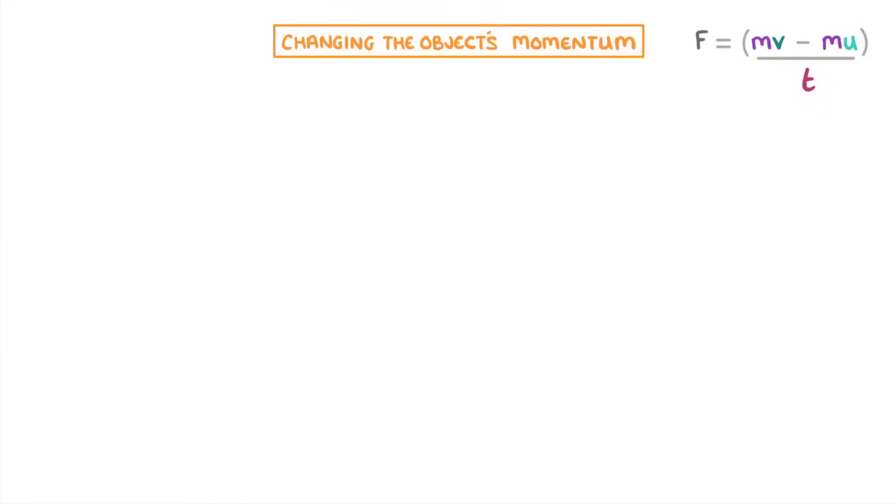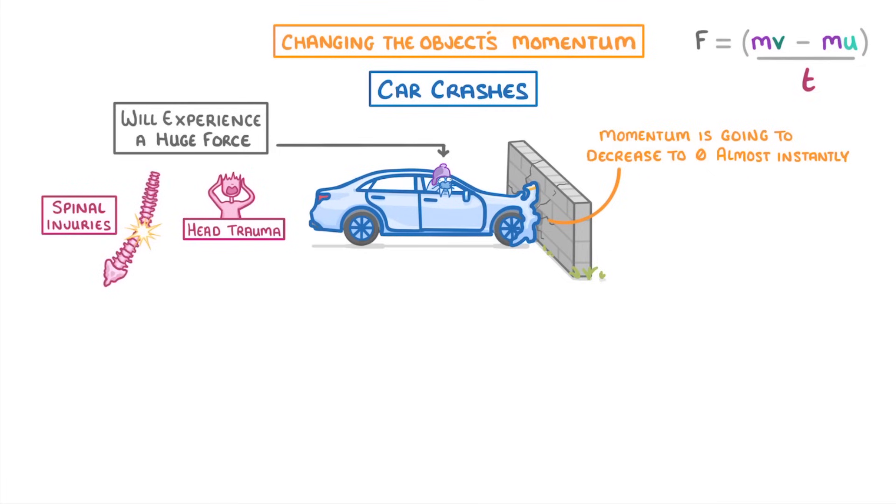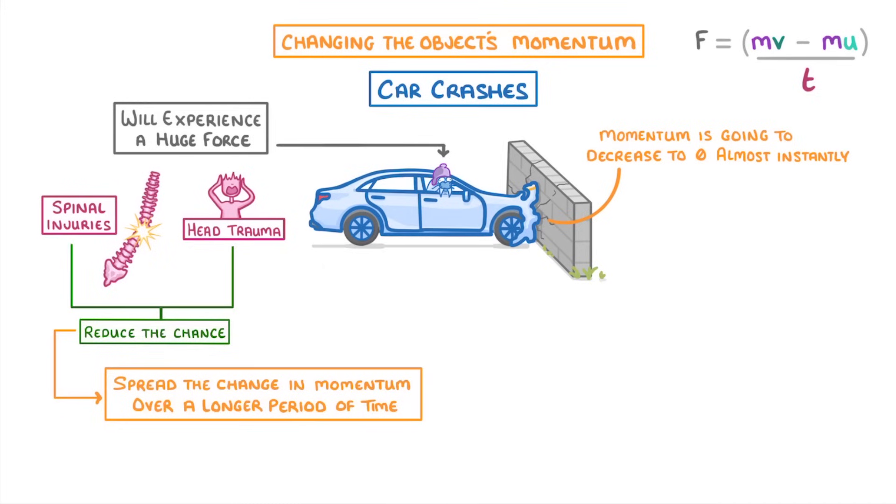Now, one area where this stuff is really important is during car crashes. If somebody travelling in a car collides with a brick wall, then their momentum is going to decrease to zero almost instantly. This massive change in momentum means that any people inside the car will experience a huge force, which can cause injuries like head trauma or spinal damage. To reduce the chance of damage, we need to try and spread this change in momentum over a longer period of time, because this will reduce the force that they experience, and so they're less likely to get injured.